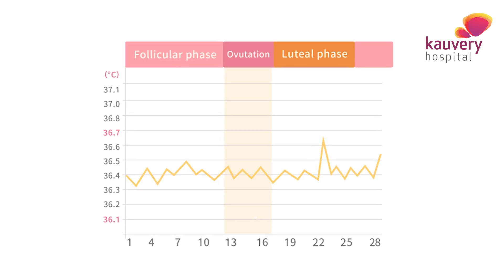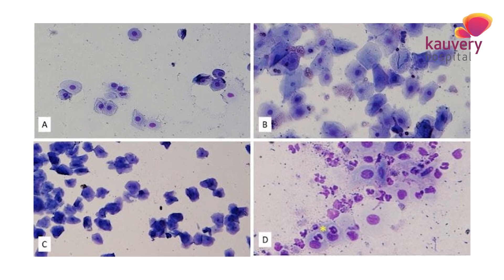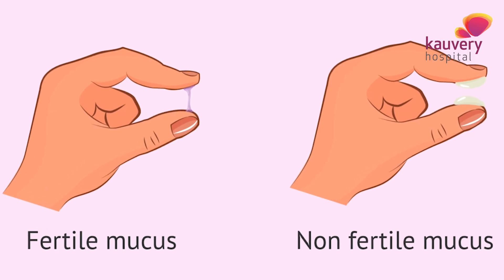It is very important for the patient to have regular menstruation in order to have ovulation. There are different tests to assess this, such as the basal body temperature chart, vaginal cytology, and cervical mucus study.